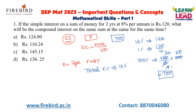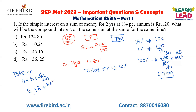Now the question is: what will be the compound interest on the same sum at the same rate for the same time? To find the total rate of interest for compound interest, you should know the formula: A + B + AB/100, where A represents the interest for the first year and B represents the interest for the second year. Since the rate is the same for both years, it is 8 + 8 + (8×8)/100. For compound interest, we also calculate interest on the first year's interest amount, which gives the AB/100 component. So the answer is 16.64%.